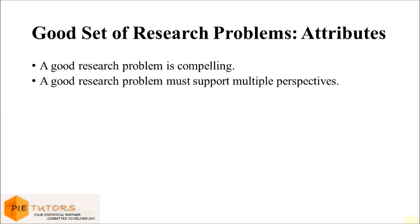The second attribute that characterizes a good set of research problems is that it should support different points of view. As a rule of thumb, a good problem set should be able to generate different perspectives from a composite research community made up of moderate individuals. In other words, the problem must be expressed in a manner that avoids disagreement and rather supports the investigation of different viewpoints.